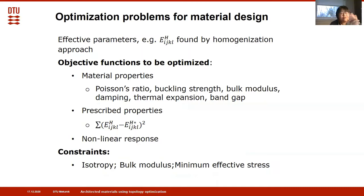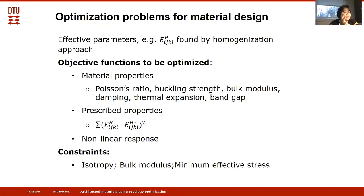After obtaining the effective material properties, we can formulate objectives to optimize material properties such as Poisson ratios, buckling strength, bulk modulus, damping, thermal expansion, and band gap. We can also design materials with prescribed properties by minimizing the error between actual and prescribed values. We can design materials for nonlinear problems considering large deformations. At the same time, we can impose constraints such as isotropy constraints, bulk modulus requirements, and minimum effective stress.